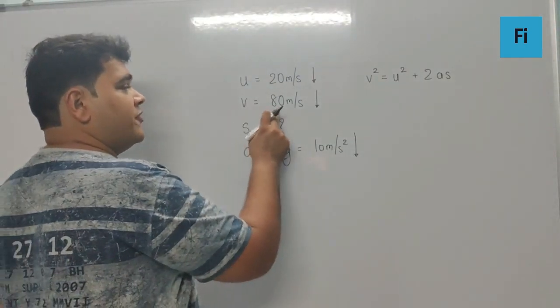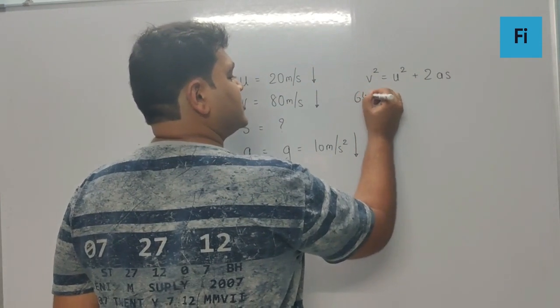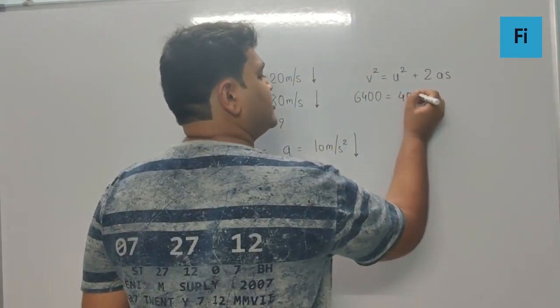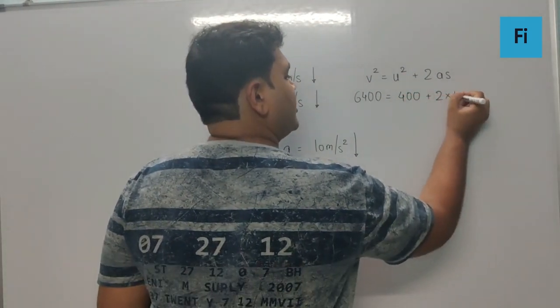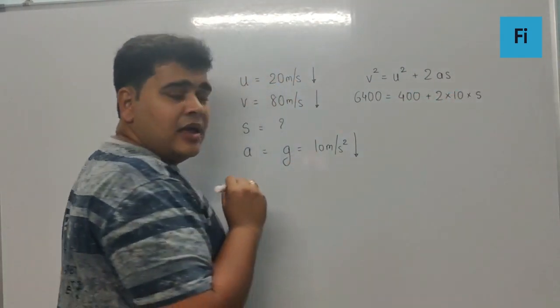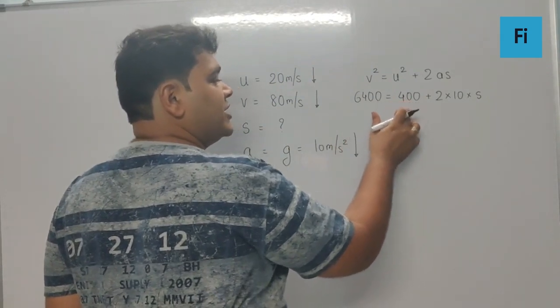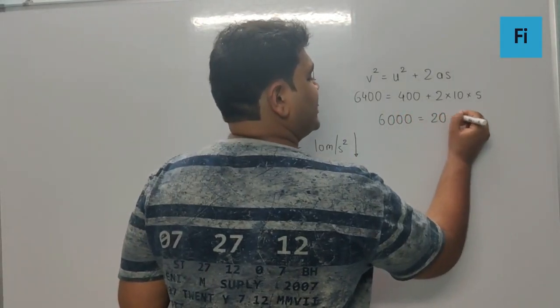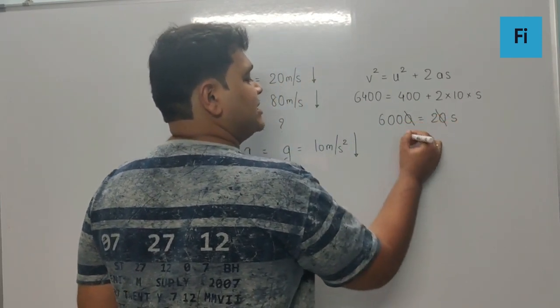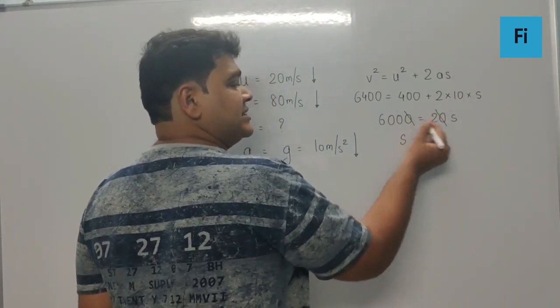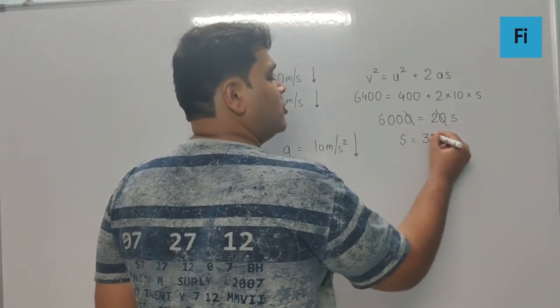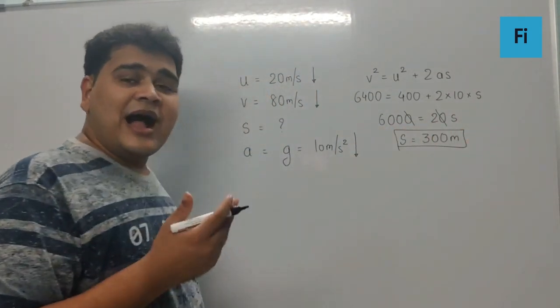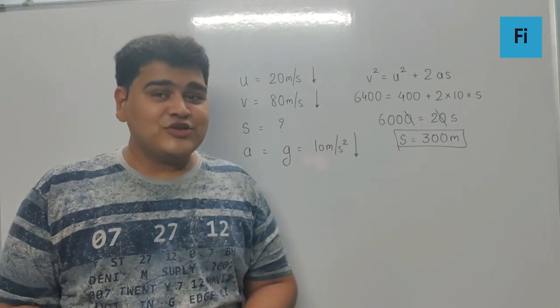The square of 80 is going to be 6400. Square of 20 is going to be 400. This will be 2 into 10 into S. Now, 6400 minus 400 makes it 6000 which is 20S. The zero gets cancelled and you get S as 600 upon 2 which is 300 meter. That is nothing but the height of the tower, and that is your final answer.